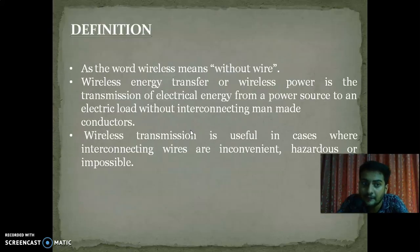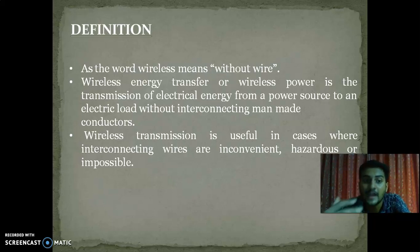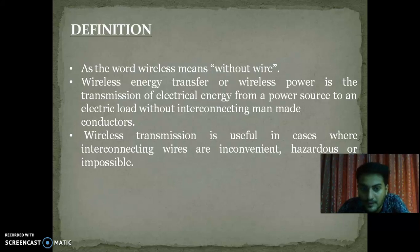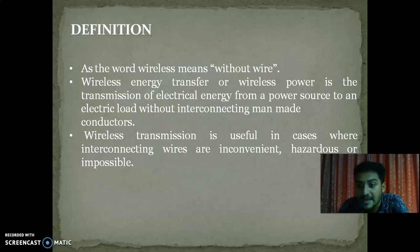Next, we can check the definition of wireless transmission. As the word wireless means without wire, wireless energy transfer or wireless power is the transmission of electrical energy from a power source to an electrical load without interconnecting man-made conductors. The use of wire is avoided here. Wireless transmission is useful in cases where interconnecting wires are inconvenient, hazardous or impossible.